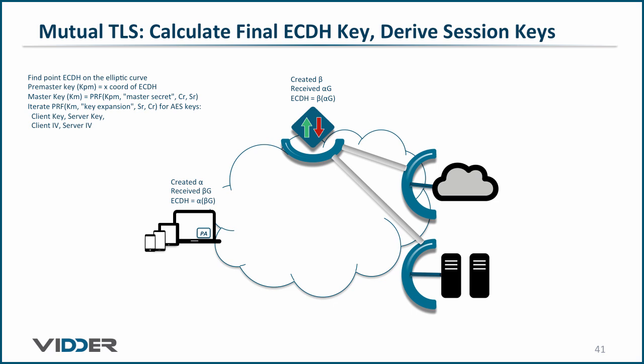Iterating through that function, we get the client's AES-256 symmetric key, the controller's key, the client's initialization vector, and the server's initialization vector.